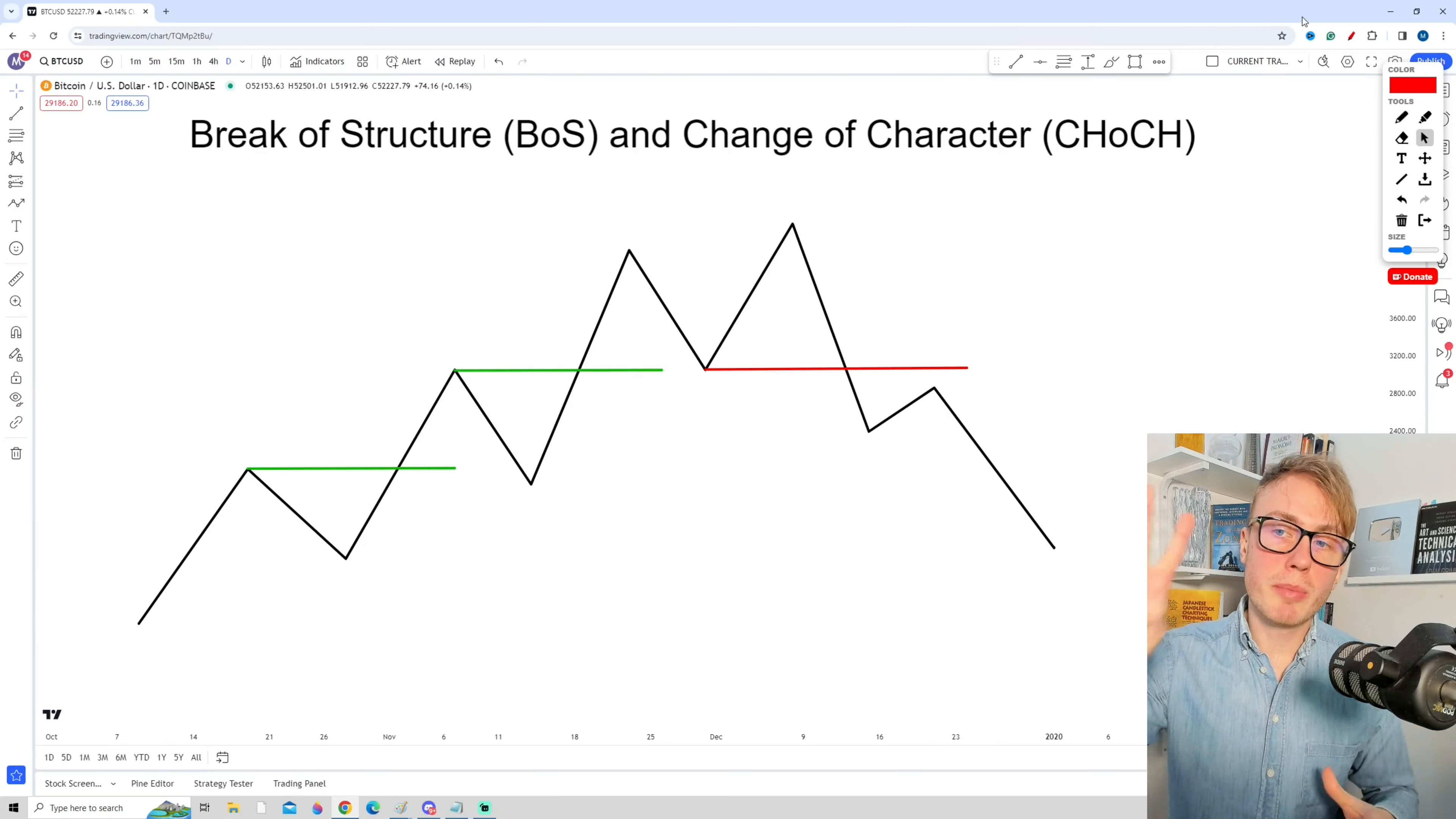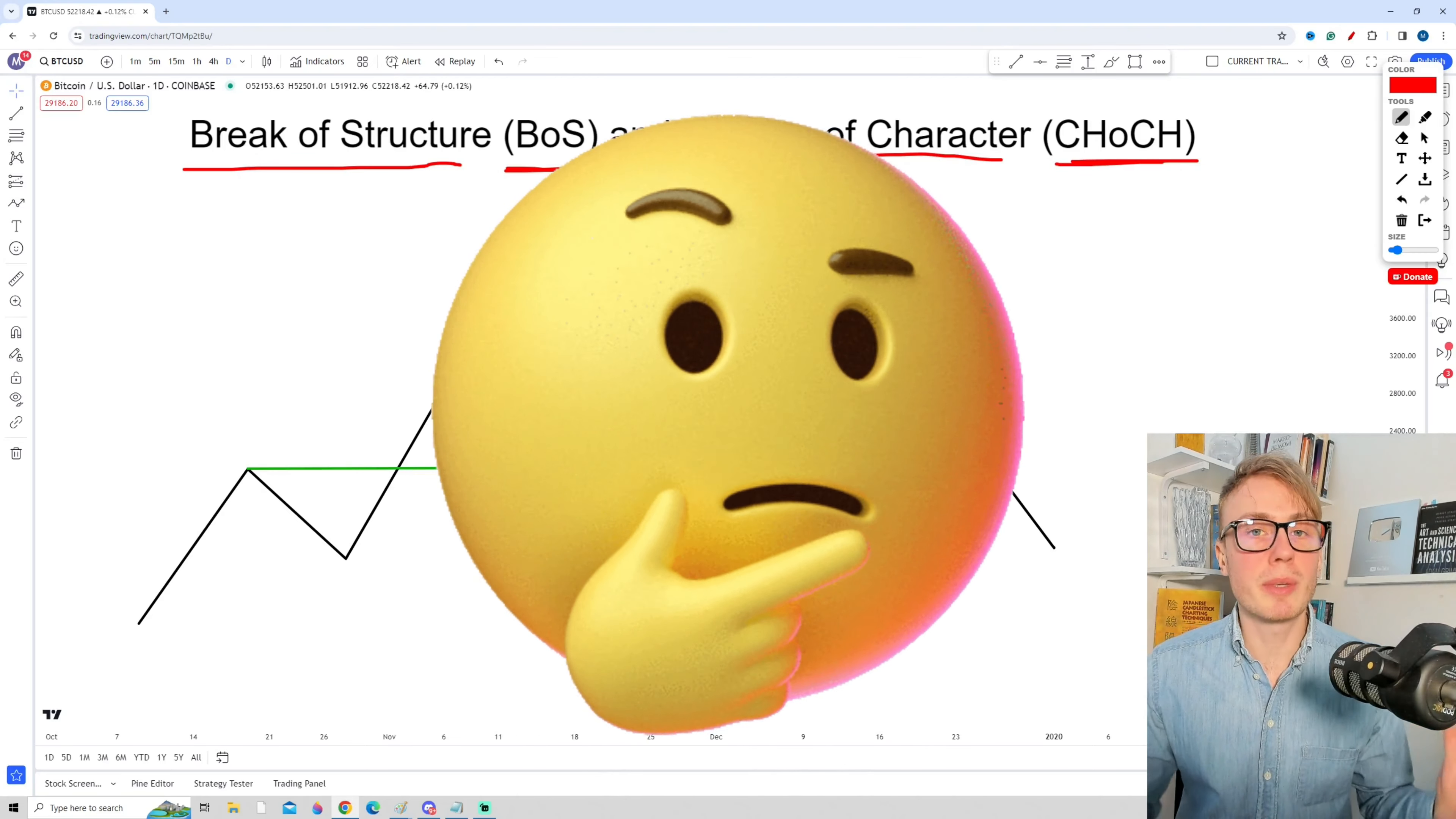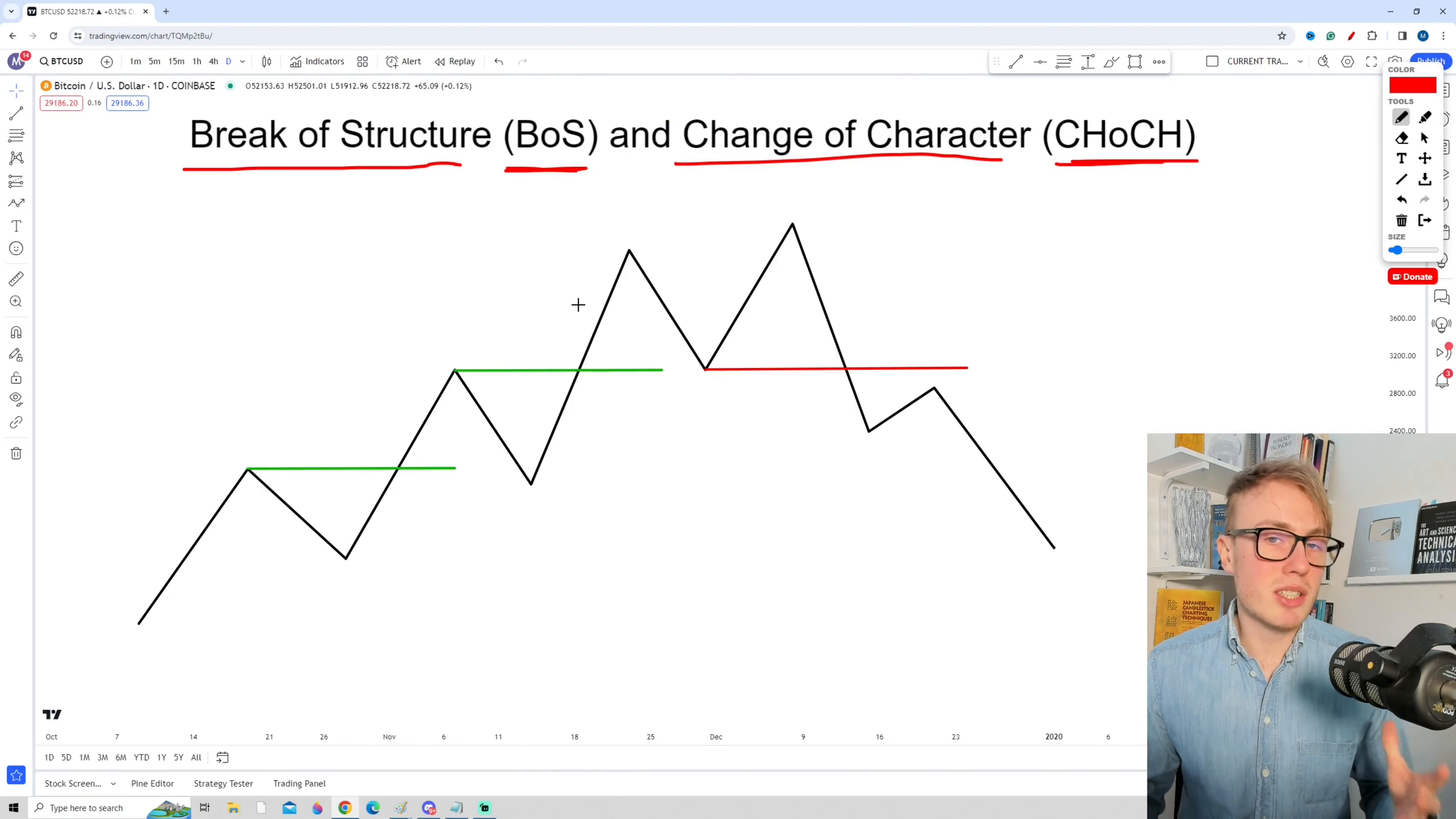Now let's talk about two important concepts that you will hear a lot in the trading world: break of structure, or for short BOS, and change of character, or for short CHoCH. This might sound very complicated on the surface, but it's actually not that complicated. Let's use a simple example here and take a look at what is break of structure and what is change of character.